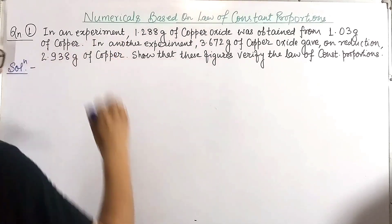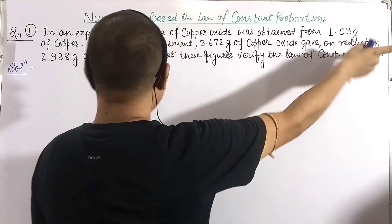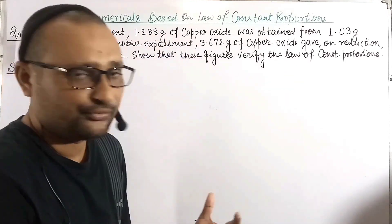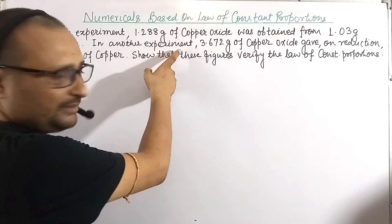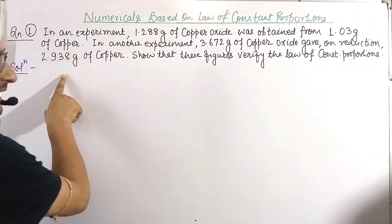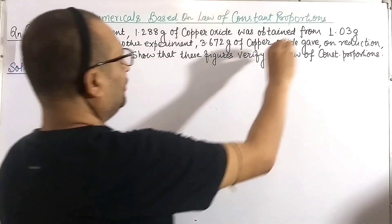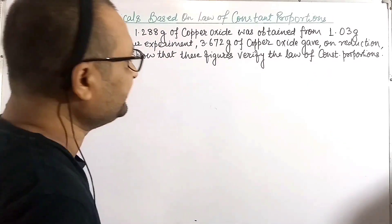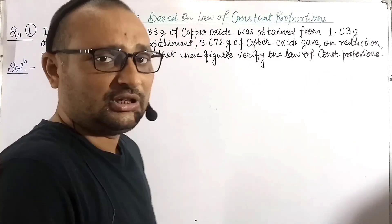Question number one: In an experiment, 1.288 gram of copper oxide was obtained from 1.03 gram of copper. In another experiment, 3.672 gram of copper oxide gave on reduction 2.938 gram of copper. We have to show that these figures verify the law of constant proportions.